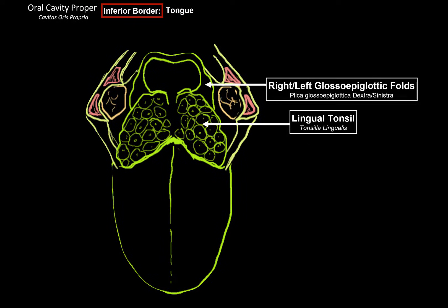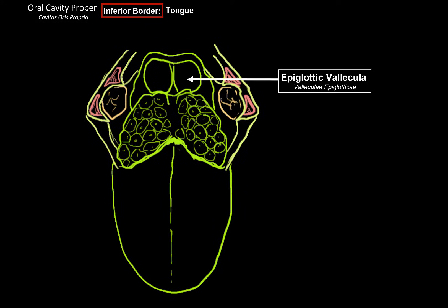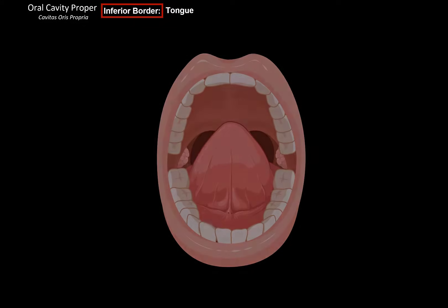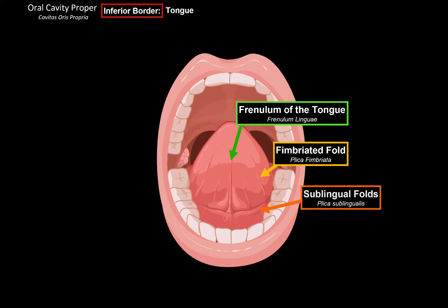Behind the lingual tonsil are the right and left lateral glossoepiglottic folds — two mucosal folds that connect the tongue to the epiglottis to hold it in place — and in the middle is the median glossoepiglottic fold. Between these folds are the epiglottic valleculae, which are depressions between the lateral and medial glossoepiglottic folds. If you lift up your tongue, you'll find the frenulum, which connects the tongue to the floor of the oral cavity. On either side of the frenulum are the fimbriated folds. On the lower border of the tongue, there's a sublingual fold with many small openings for sublingual ducts from the sublingual glands, and the sublingual caruncle — two tubercles on either side of the frenulum where the submandibular and major sublingual glands open into.